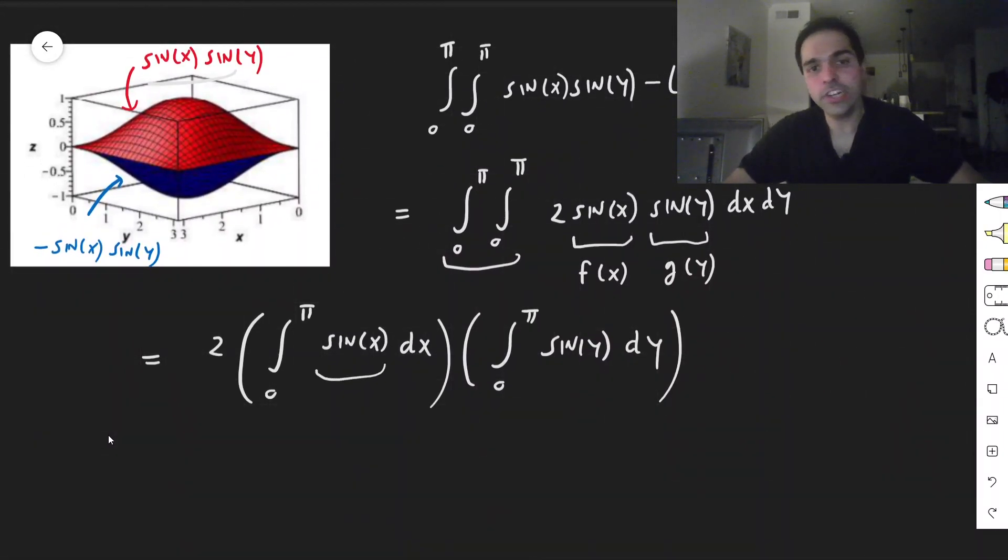And even better than that, notice here, we are integrating the same function. So, it turns out the answer is just two times this integral squared. Because this is the same thing as this. So, we kind of, you're doing x times x, which is x squared. So, two times integral from zero to π sine of x dx squared. So, all we need to do is calculate this.